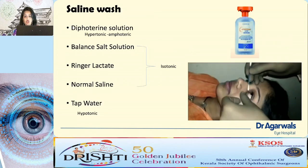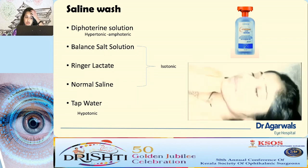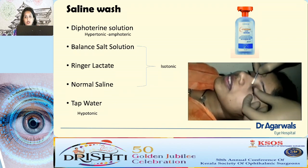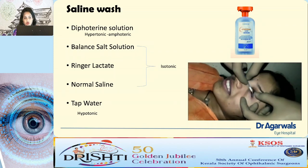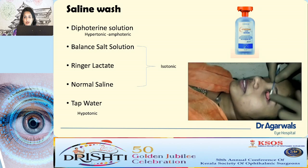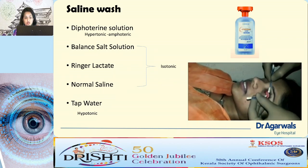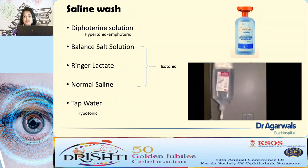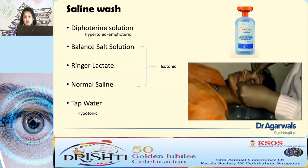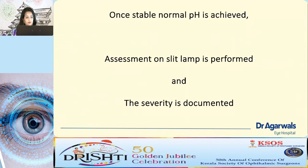The ideal choice of irrigation solution is the diphoteric solution, which is hypertonic in nature — hypertonic solutions help reduce corneal edema and flush out chemical solutions. Amphoteric in nature means it can be used for both acids and alkalis. If diphoteric is unavailable, balanced salt solution, Ringer's lactate, or normal saline can be used. Tap water should be avoided and used only if nothing else is available.